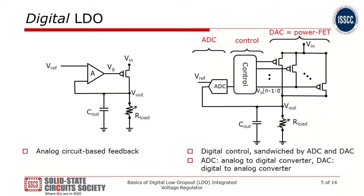This slide shows the digital LDO on the right side and analog LDO on the left side. Analog LDO receives the input voltage from the top and produces the output voltage to supply current to the load circuit. Analog LDO implements a negative feedback control loop to regulate its output voltage toward V-reference. To do so, it employs an analog amplifier which senses the difference between output voltage and reference voltage and produces the gate voltage VG, modulating the resistance of the power transistors. This way it can regulate V-out close to V-ref.